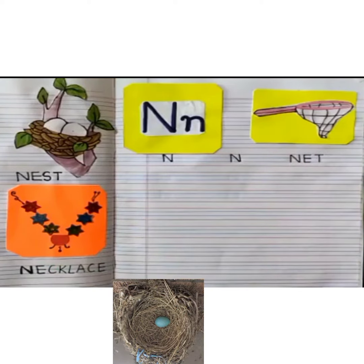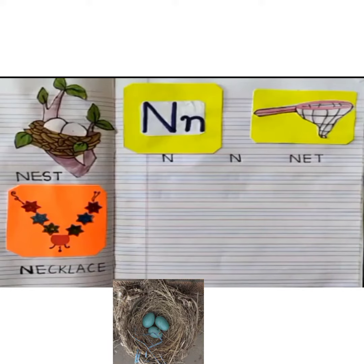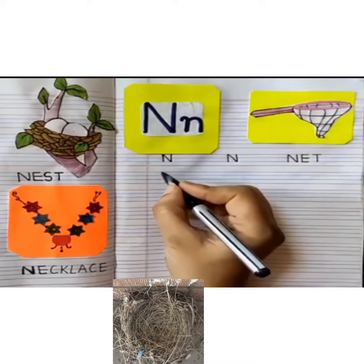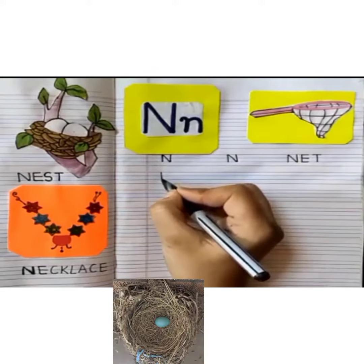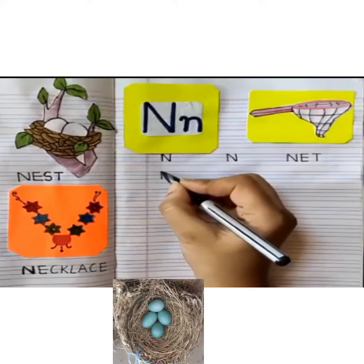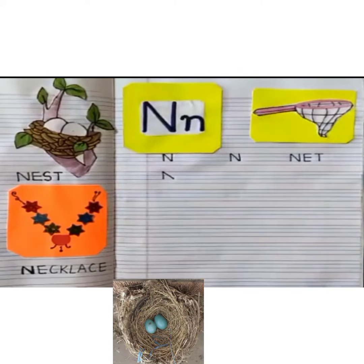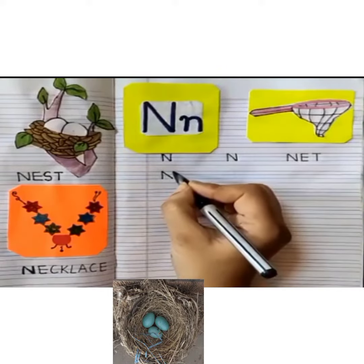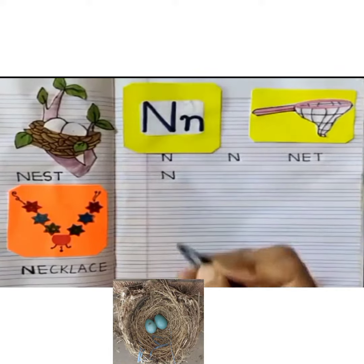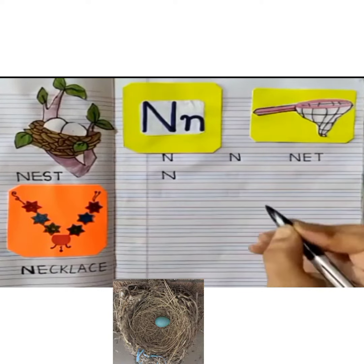Now children, I will teach you how to write this letter N. To write letter N, make one standing line from the red line to the last blue line. Then one slanting line from the red line to the last blue line. Then one standing line from the red line to the last blue line, joining the slanting line. This is letter N.